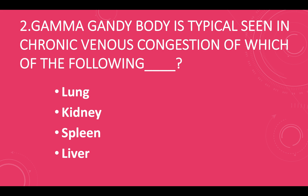Gamma Gandy body is typically seen in chronic venous congestion of which of the following? Option A — lungs, option B — kidney, option C — spleen, option D — liver. Answer: option C, spleen.